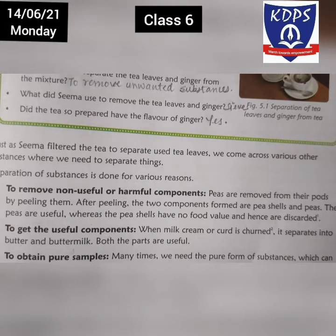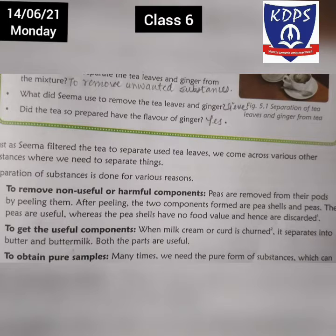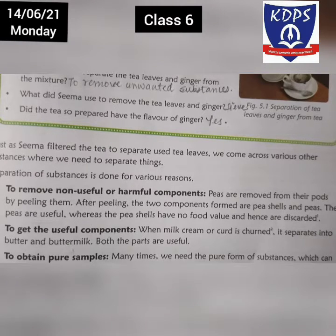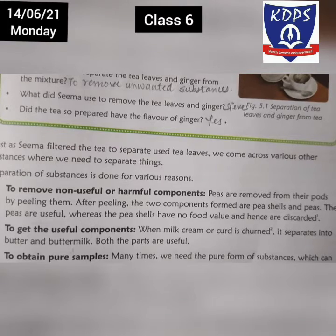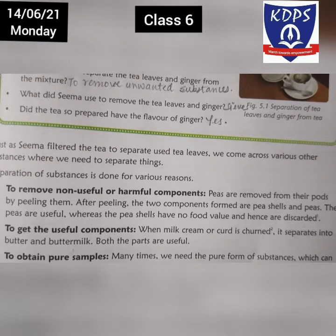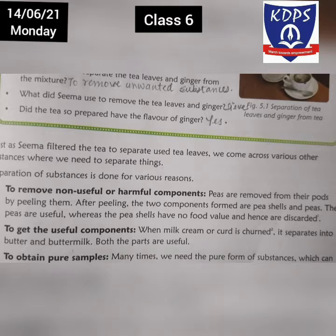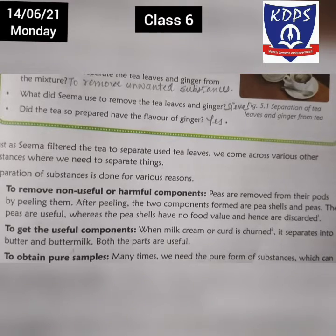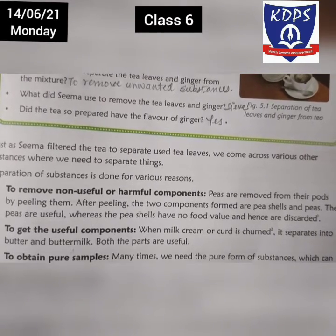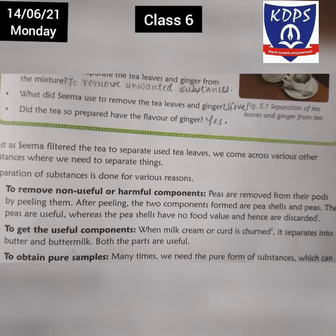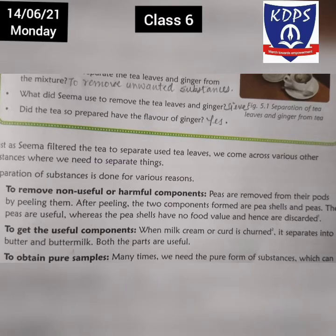The inside peas are edible and useful in our food, while the shells are considered waste and unwanted. So the point is that the reason we separate things is to remove unwanted particles.